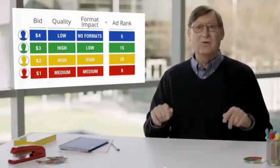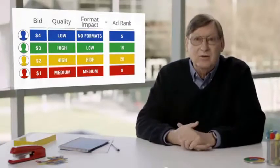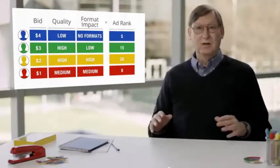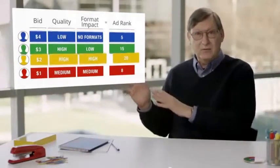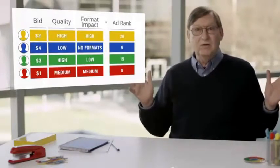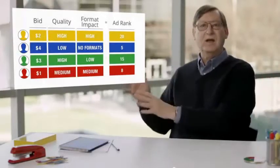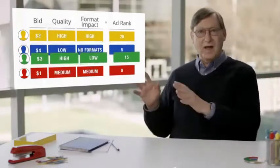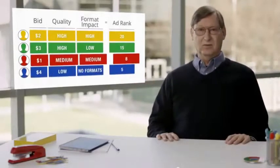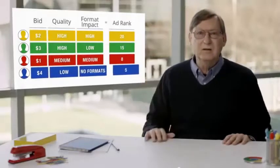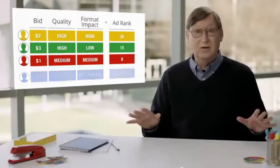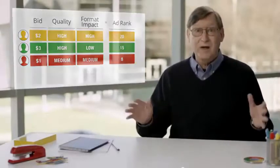It's this ad rank score that determines ad position on the results page, and only ads with a sufficiently high rank appear at all. So the ad with an ad rank of 20 gets first position, even though it has a lower bid — because of its quality and formats. The second highest ad rank is 15, so that ad gets position 2. The third highest ad rank is 8 and lands in position 3. The advertiser bidding $4 has such a low quality and format impact that it doesn't get a position on the page at all, despite having the highest bid.